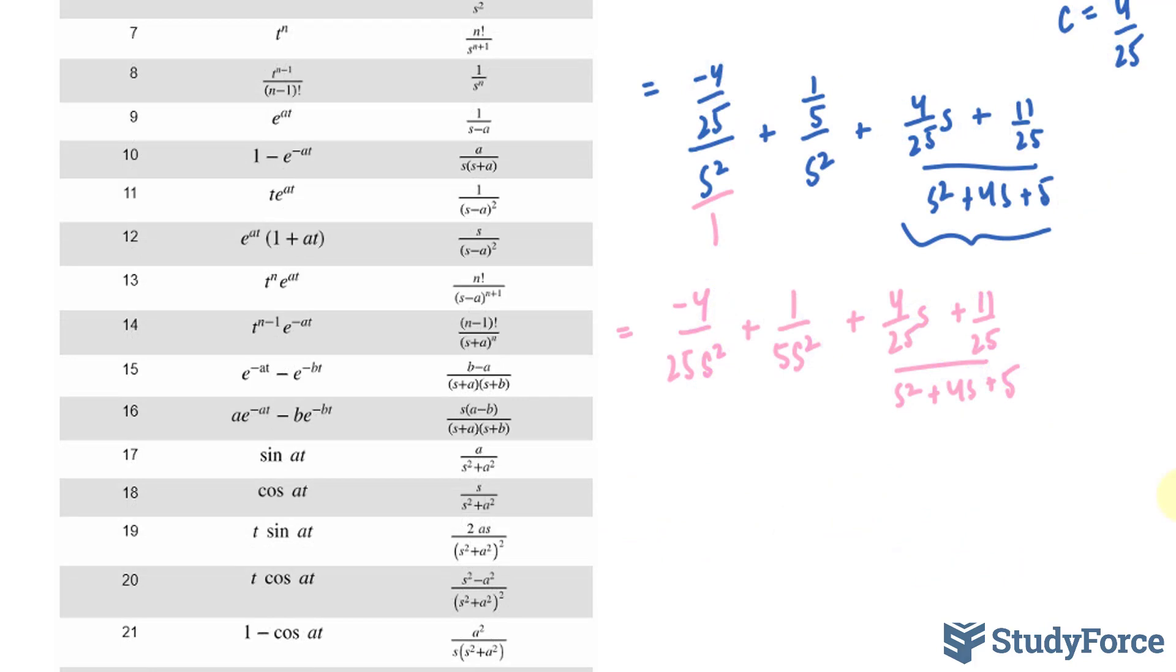Interestingly, if you factor out 1/25 from each of these, it actually makes it easier for us to work with. Take a look. If I factor out, right now, 1/25 from this term, I end up with 1/25 as a common factor. Here we have -4/s^2. Here we have positive 5/s^2. And for this fraction, you would end up with 4s + 11 over s^2 + 4s + 5.